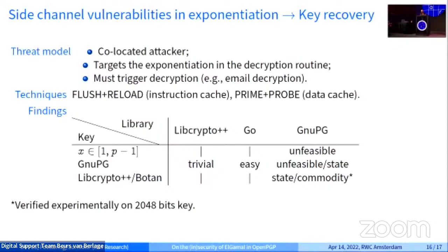We also have side-channel attacks. The leakage gives some information on the exponent, but you still need to run some discrete log computation to find the missing bits. Our framework is a co-located attacker — for example in a cloud environment, one core running GPG and another core being the attacker — and you can find the secret key this way. This is relatively easy against Crypto++ and Go. Against GPG it's tougher, but if the key was generated by Crypto++ and then fed to GPG which does the decryption, the attack becomes much easier because Crypto++ uses even shorter exponents than GPG. Depending on how lucky or unlucky you were, the attack can be within reach of a nation-state actor or even within reach of a laptop.